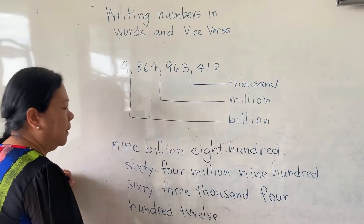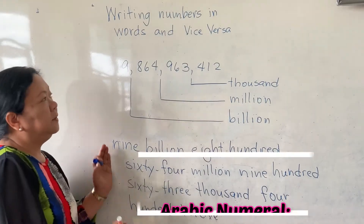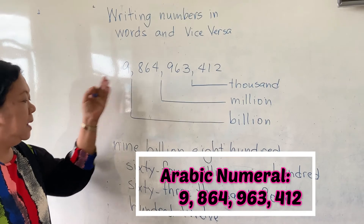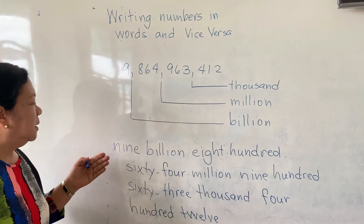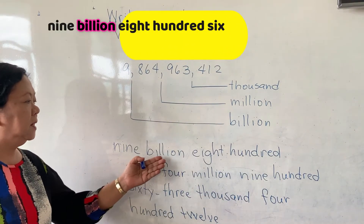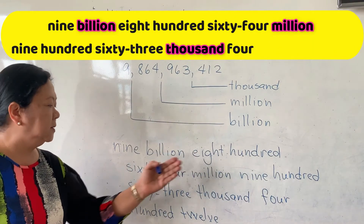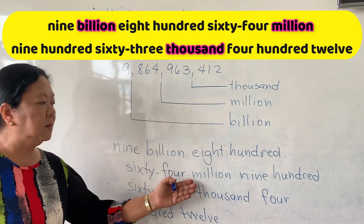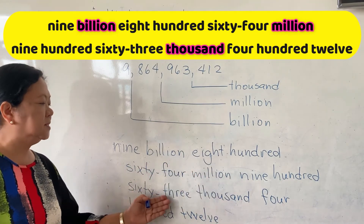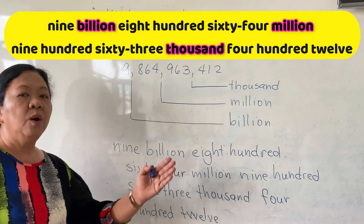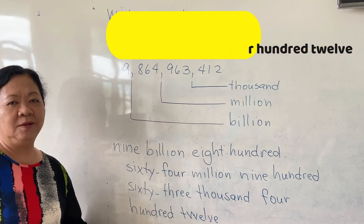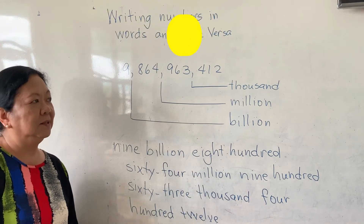So, this number in Arabic numerals is read as: nine billion, eight hundred sixty four million, nine hundred sixty three thousand, four hundred and twelve. That's it.